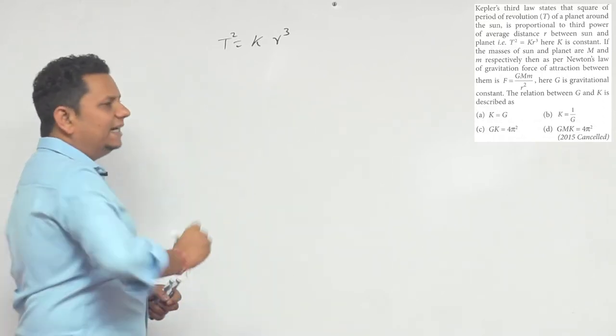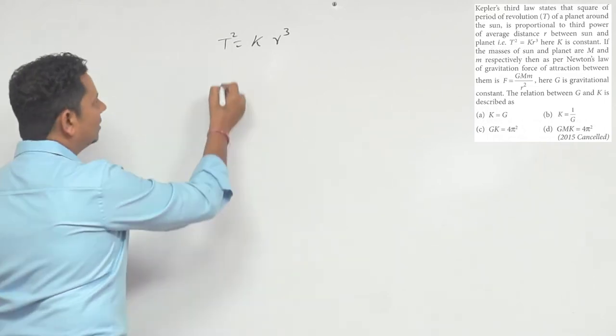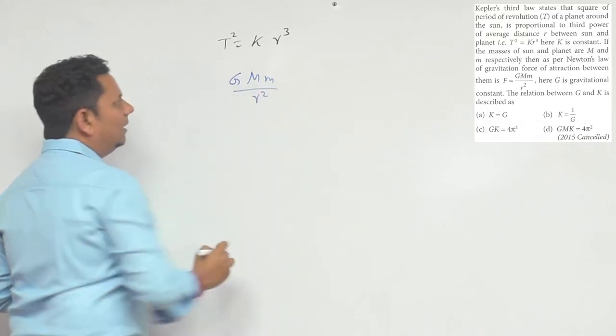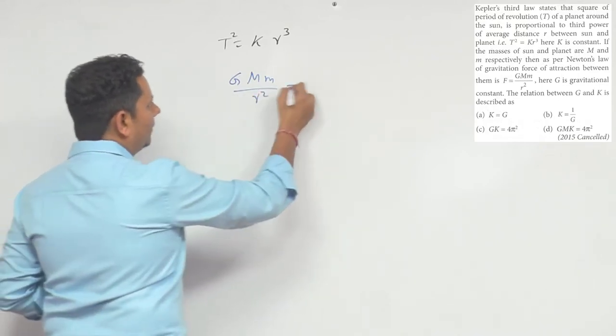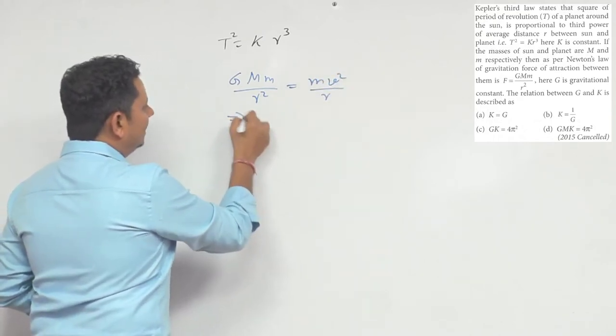Now, if there is a satellite or a planet revolving about it, then we can write the force of attraction GMm/r² is the necessary centripetal acceleration shown. So this will be equal to mv²/r.